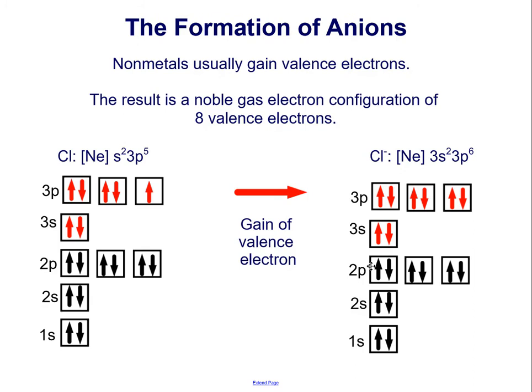The formation of anions. Non-metals usually gain valence electrons. The result is a noble gas electron configuration of eight valence electrons. You can see here that the neutral chlorine atom has an opening for one more electron. By gaining a valence electron, its 3p shell is complete. Its 3s was already complete. So now it's acquired the noble gas configuration of 3s², 3p⁶.